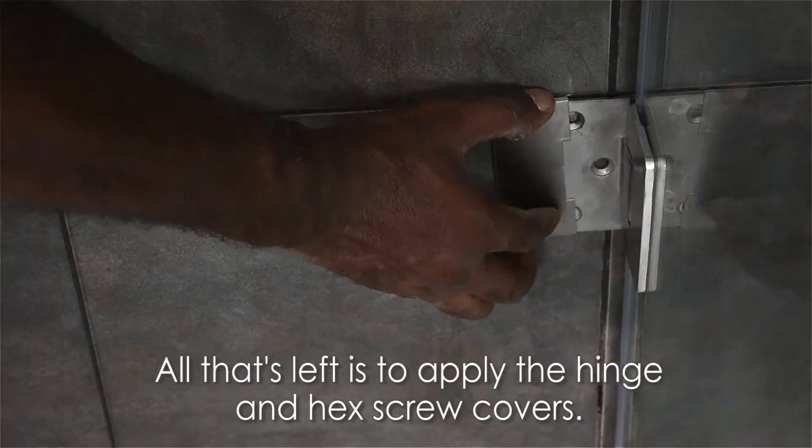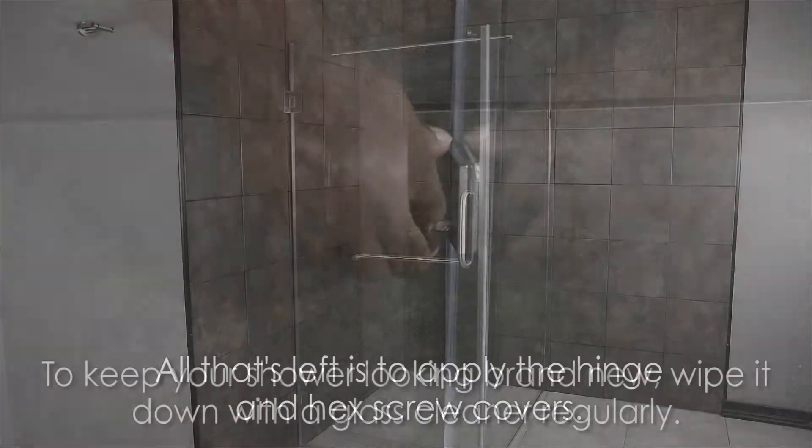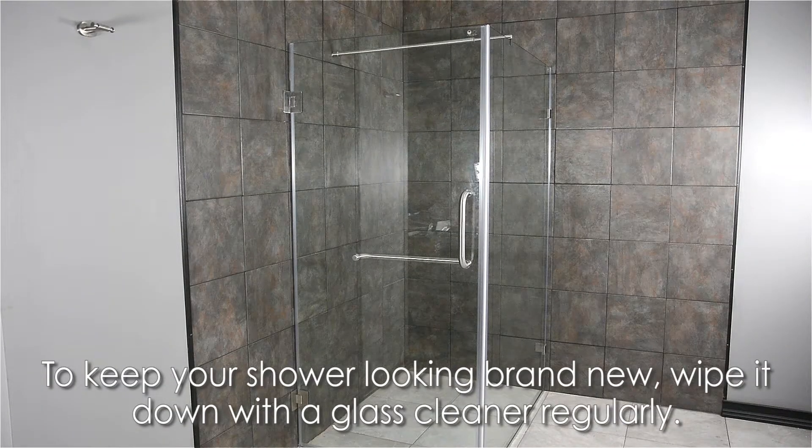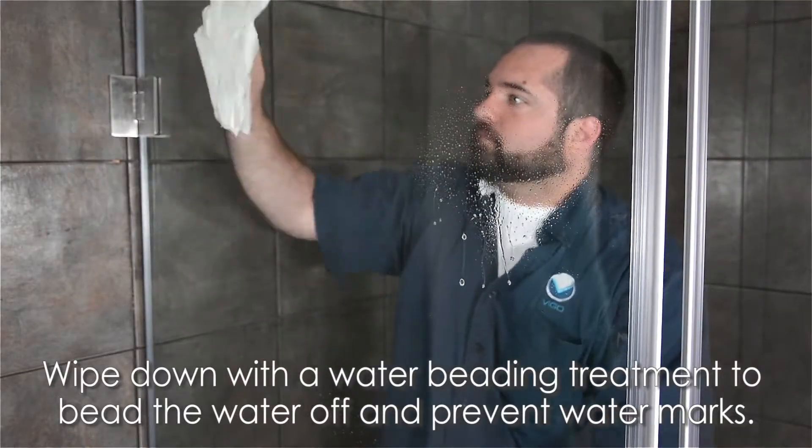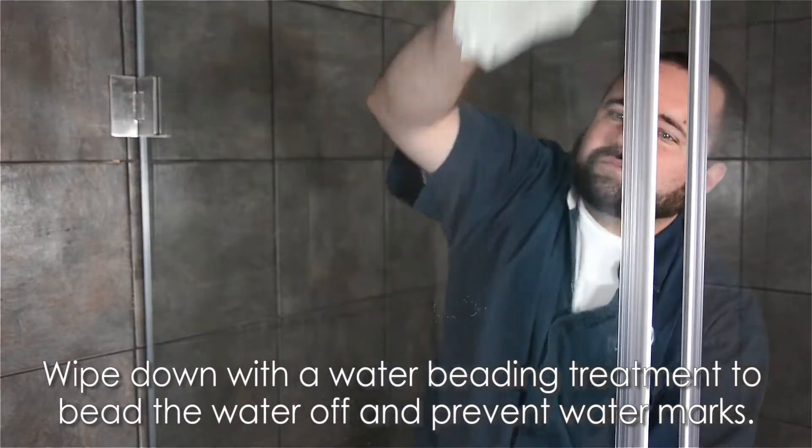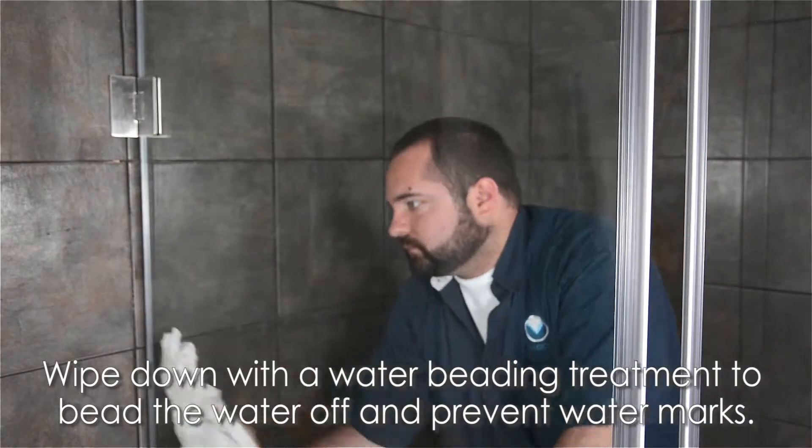All that's left is to apply the hinge and hex screw covers. For best results and to keep your shower looking brand new, wipe it down with a glass cleaner regularly. We also recommend using a water beading treatment on the inside of your panels similar to one you'd use to treat your car windshield to bead the water off and prevent watermarks.